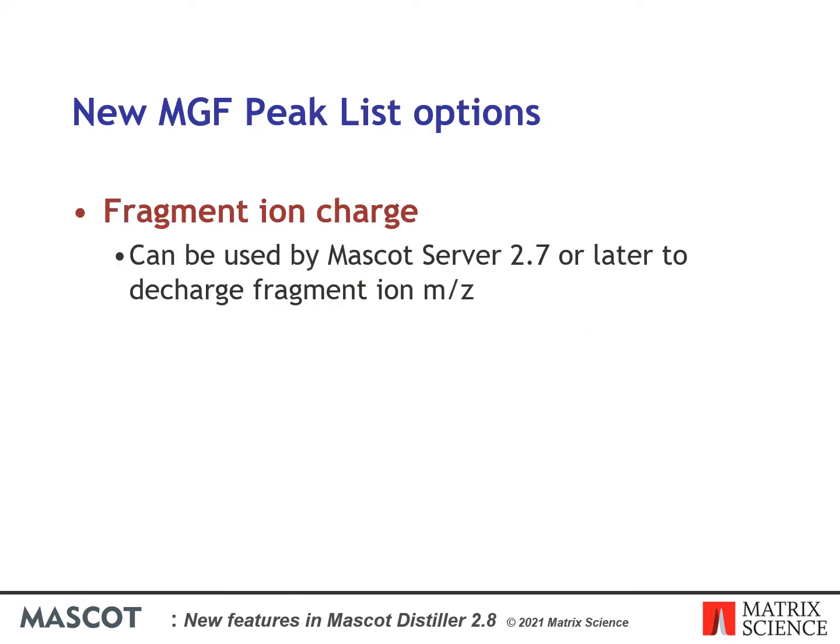In Mascot Distiller 2.8 you can output a number of new features into any MGF peak lists generated. These include the charge of the individual fragment ions. Mascot Server 2.7 or later can use this information to de-charge the MS/MS peak list, which is important if you have charge states greater than 2+ and can improve the results for these types of data.